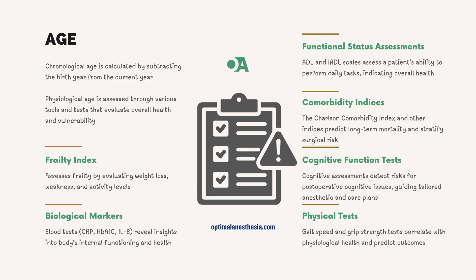First, let's clarify what we mean by chronological and physiological age. Chronological age is the easy part — it's simply the number of years a person has lived. You calculate it by subtracting the year of birth from the current year. For example, if you were born in 1980 and it's now 2024, your chronological age is 44. But this only gives us a baseline; it doesn't tell us much about a person's overall health or how they might respond to anesthesia.